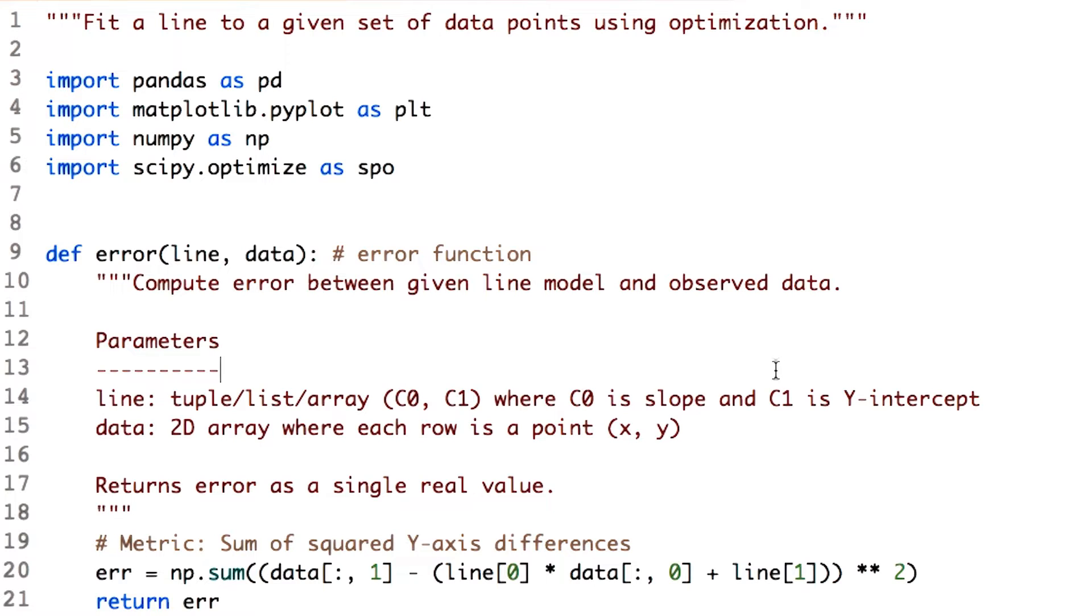Now we'll look at some example code that can fit a line to data that's given. Remember, we're using an optimizer to do this.